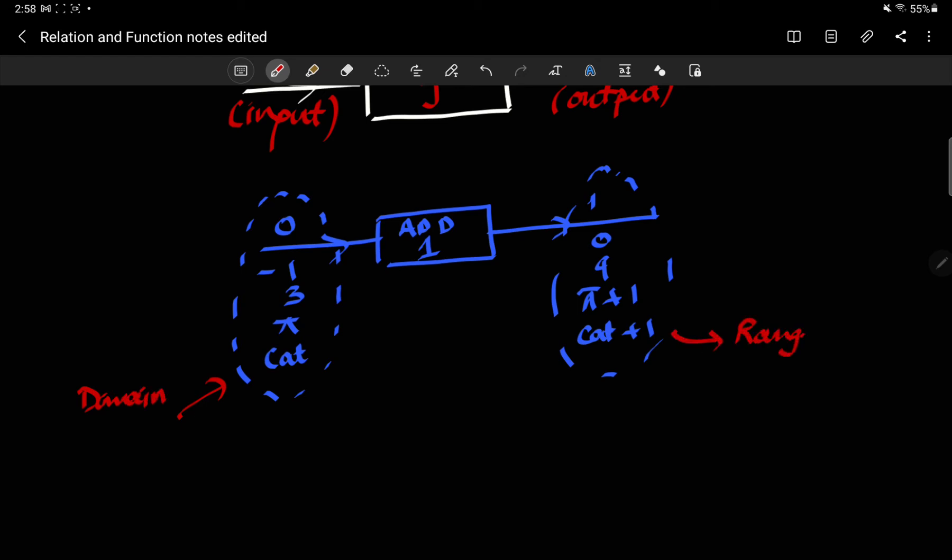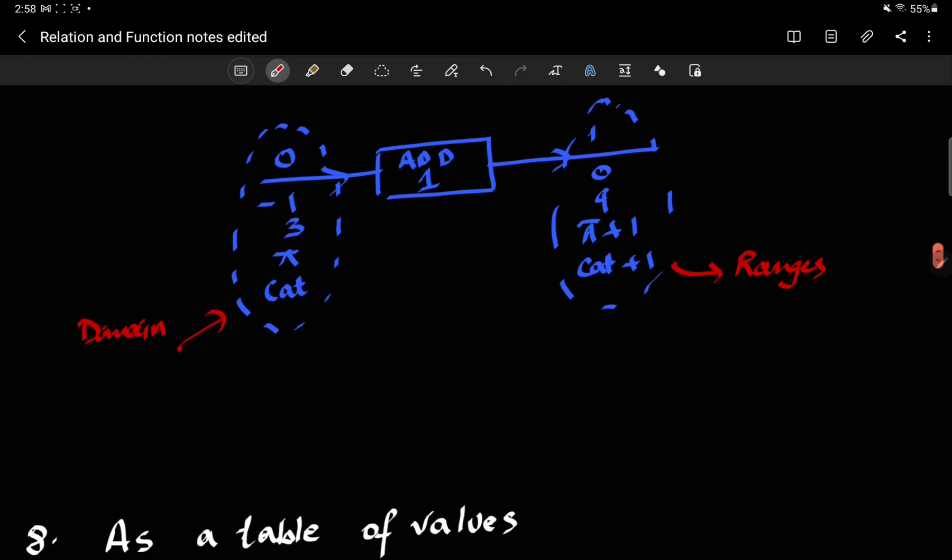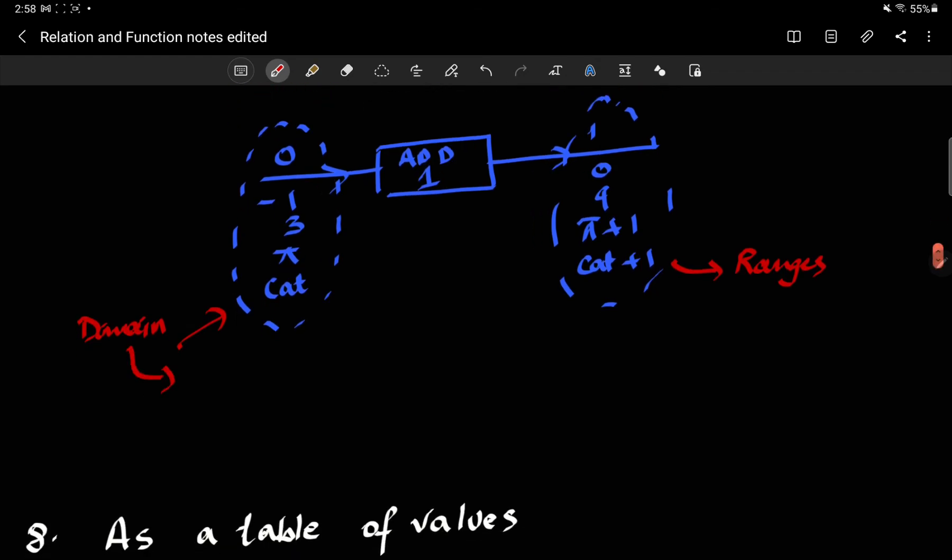Which means that now we have another definition for domains, which is the set of valid inputs. In this new formulation of what a function means, domains represent set of valid inputs and ranges represent the set of associated outputs.